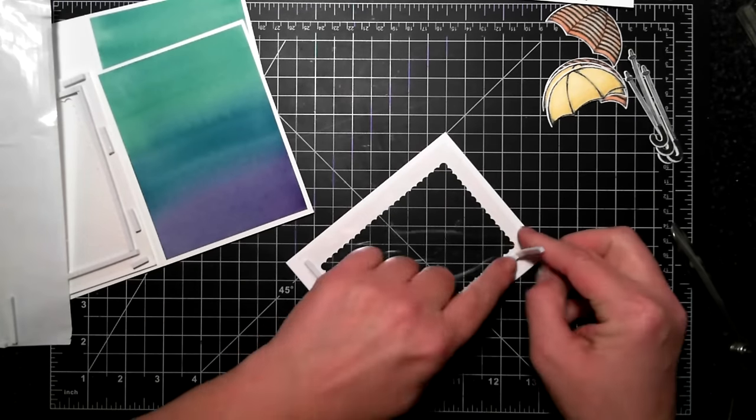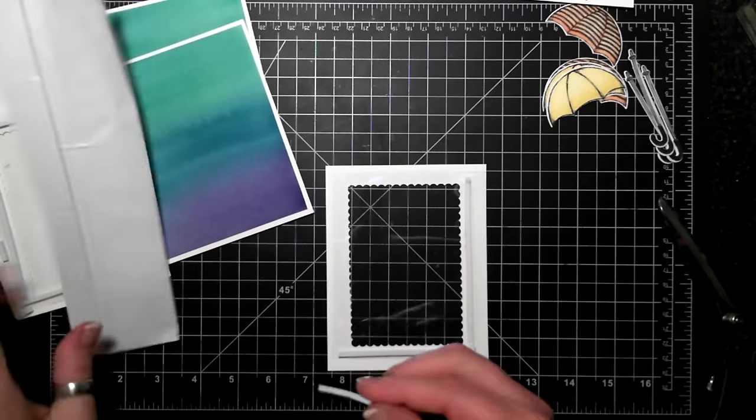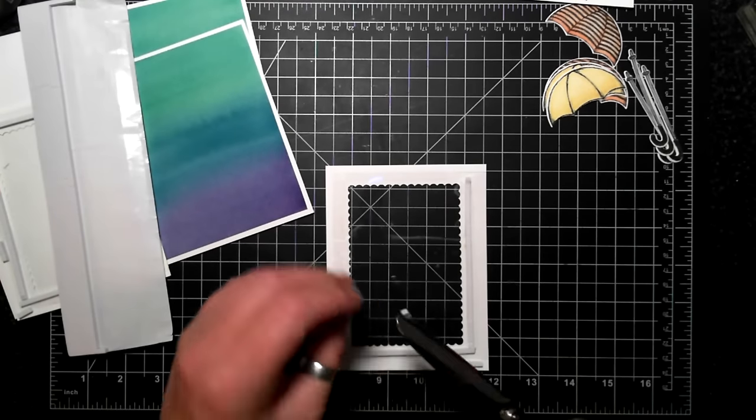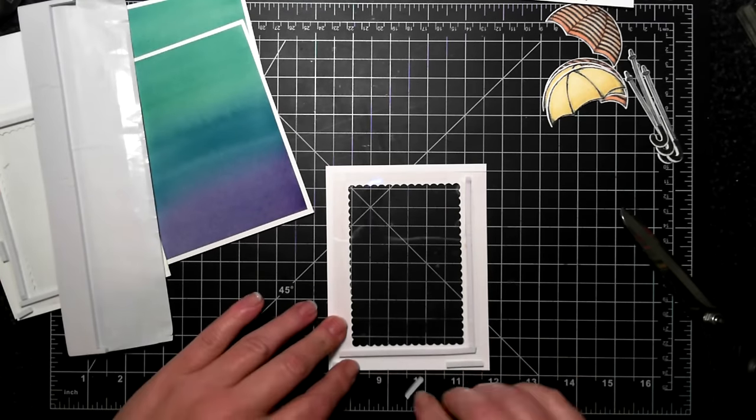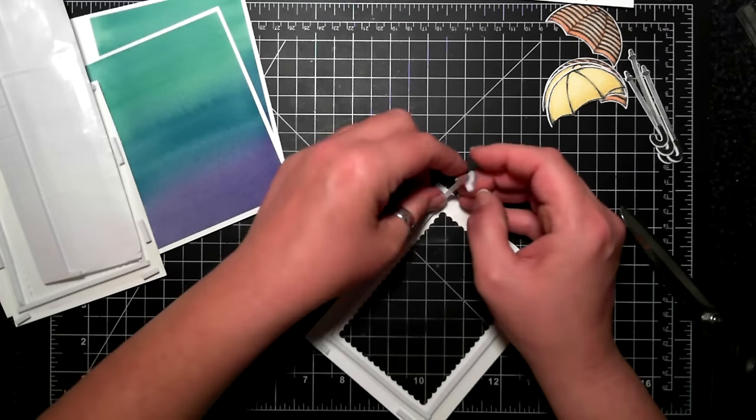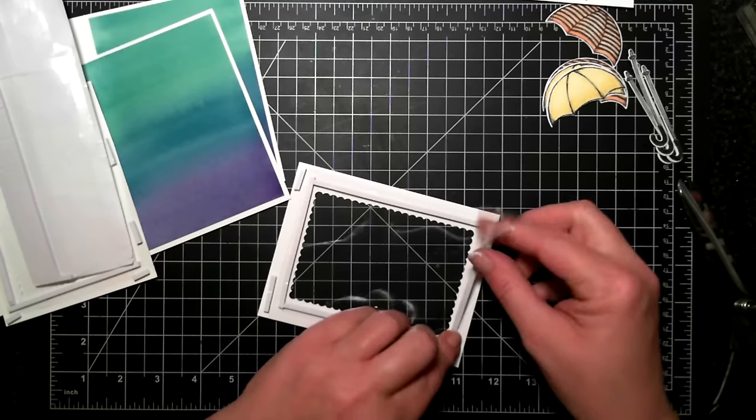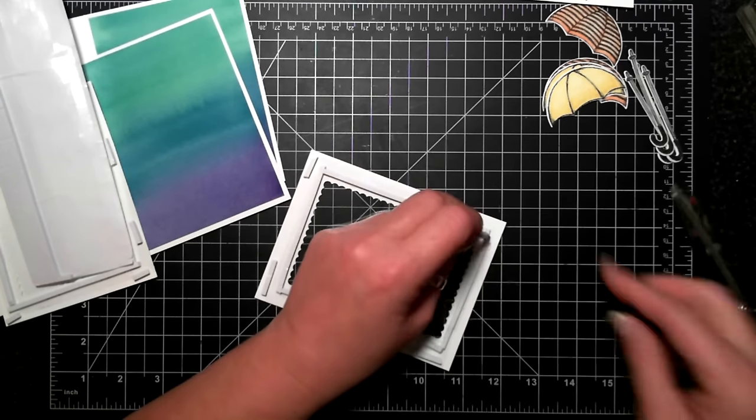So I'm using these foam strips from Stampin' Up - they are fantastic for shaker cards and this is a shaker card we're making today. Just want to remind you that those little extra bits really do help when you're putting them in the corners, not just a rectangle around the opening but on the edges as well so they don't get crumpled.